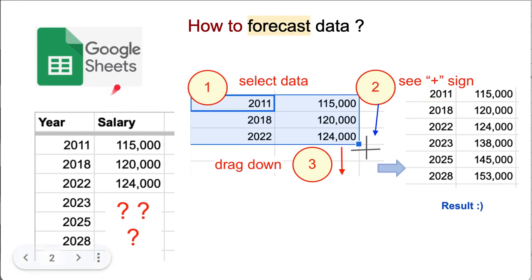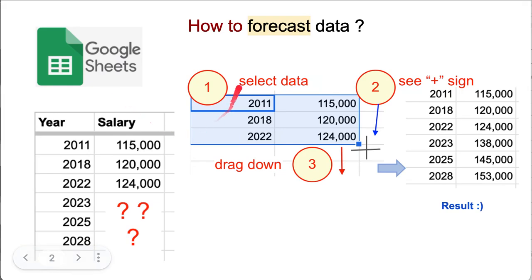One of the easiest and best tools is Google Sheets. To predict data, you need first to select the data, then see the plus sign in the corner, and the last step is to drag down your data. That's all.